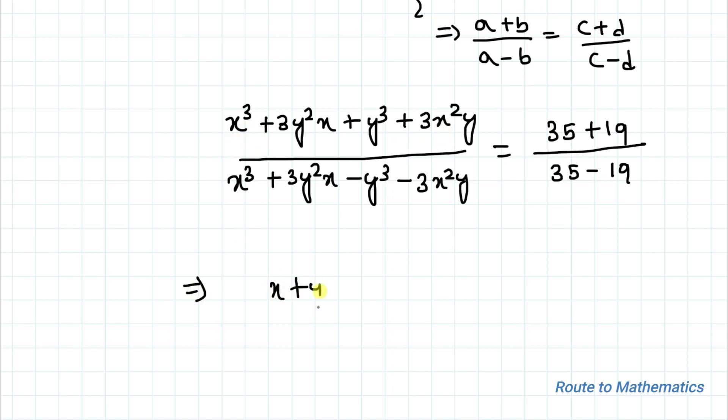This implies this total term is equal to (x+y)³, so we can write just (x+y)³ divided by, and in the denominator we have x³ - y³ - 3x²y + 3y²x which equals (x-y)³, equals 54/16.